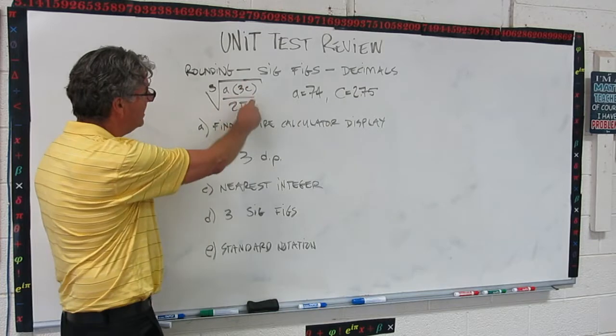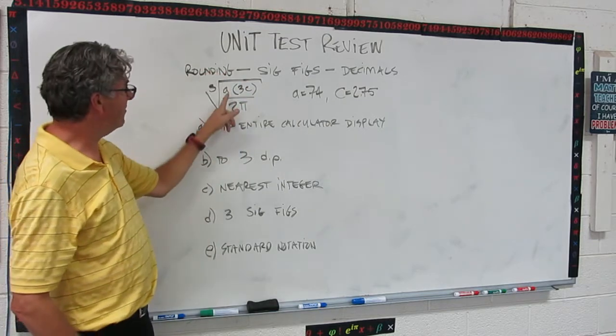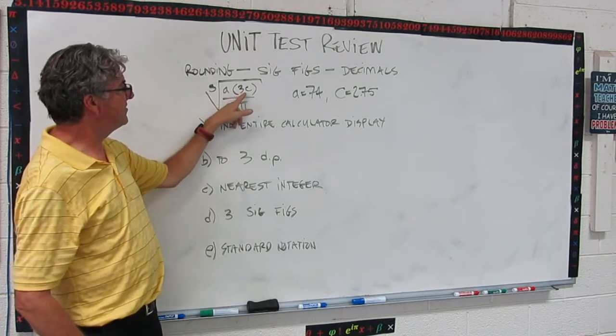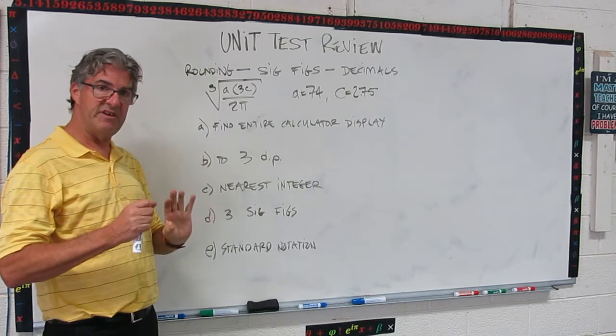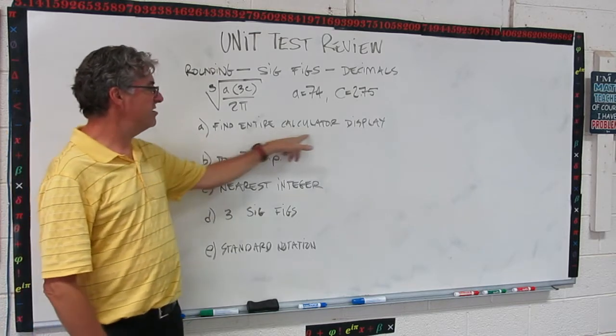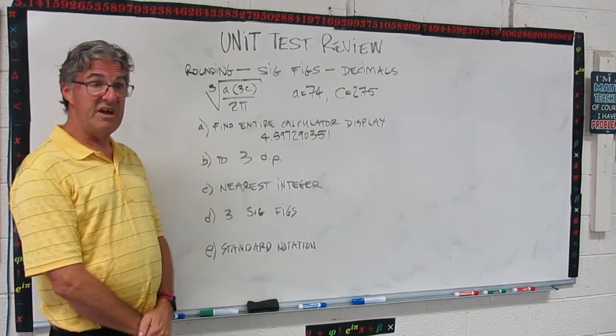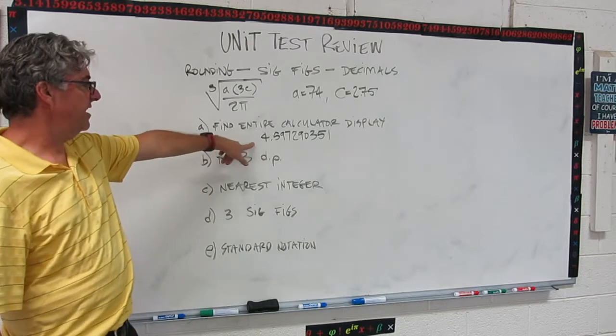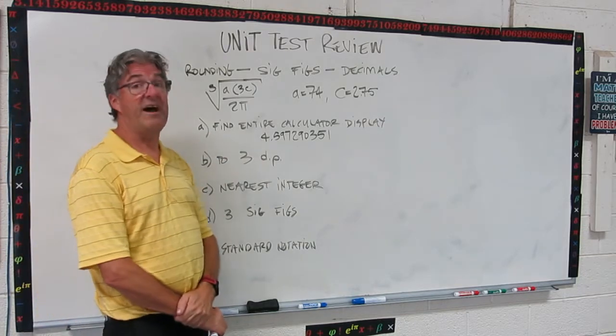Use your calculator to evaluate this expression using 74 for A and 2.75 for C. So go ahead and plug it in here and do this count. This is the third root of the quotient of the product of A and 3 and C and 2 pi. So go ahead and pause the video, crunch that out, and find the entire calculator display. So write all the numbers that your calculator shows. Okay, let's see how you did. Here's what I get on my calculator.